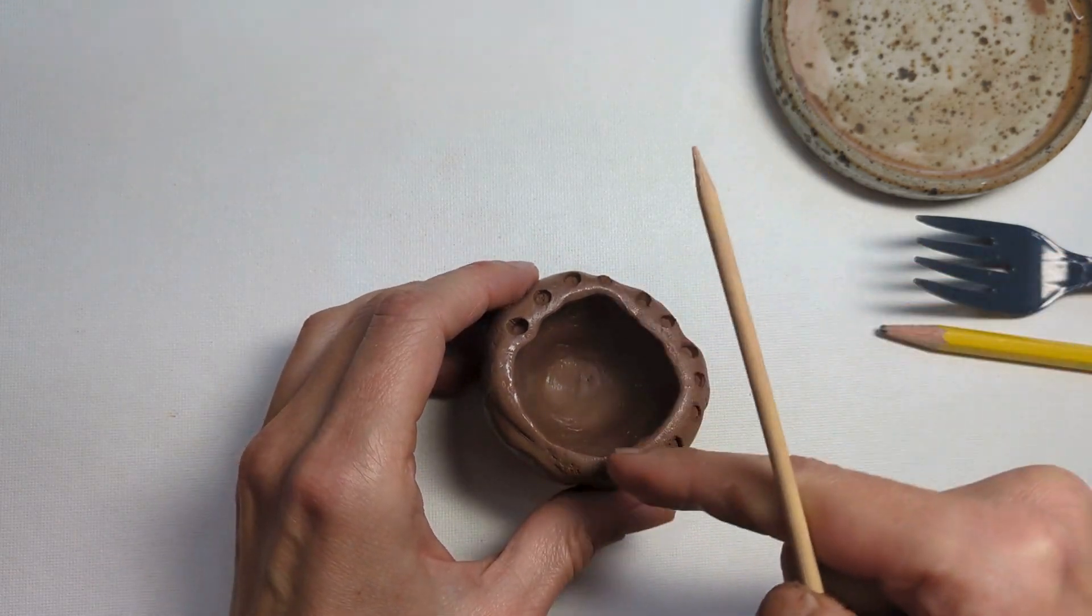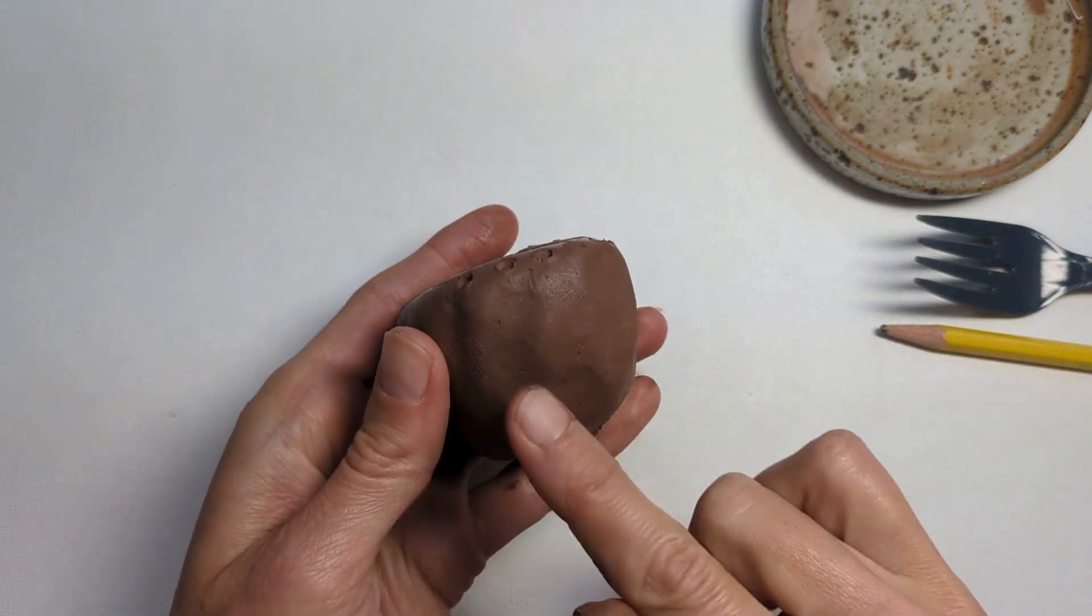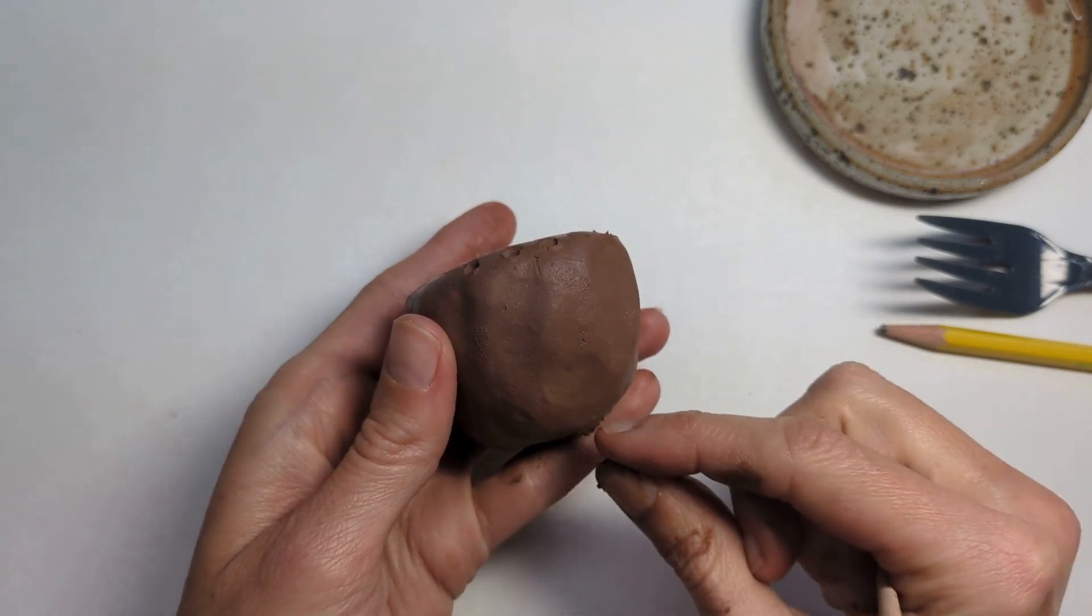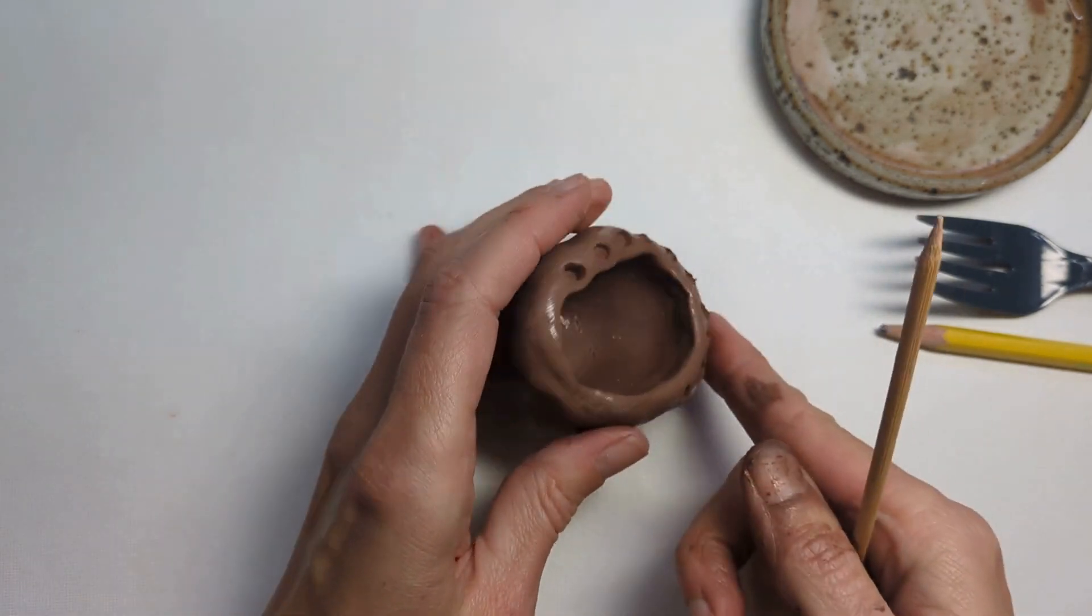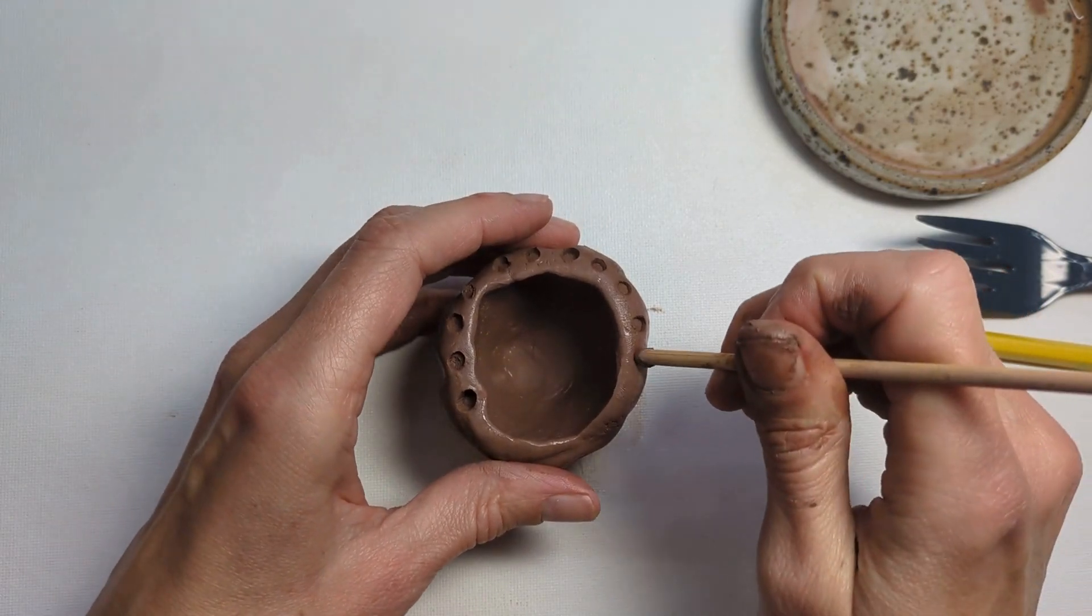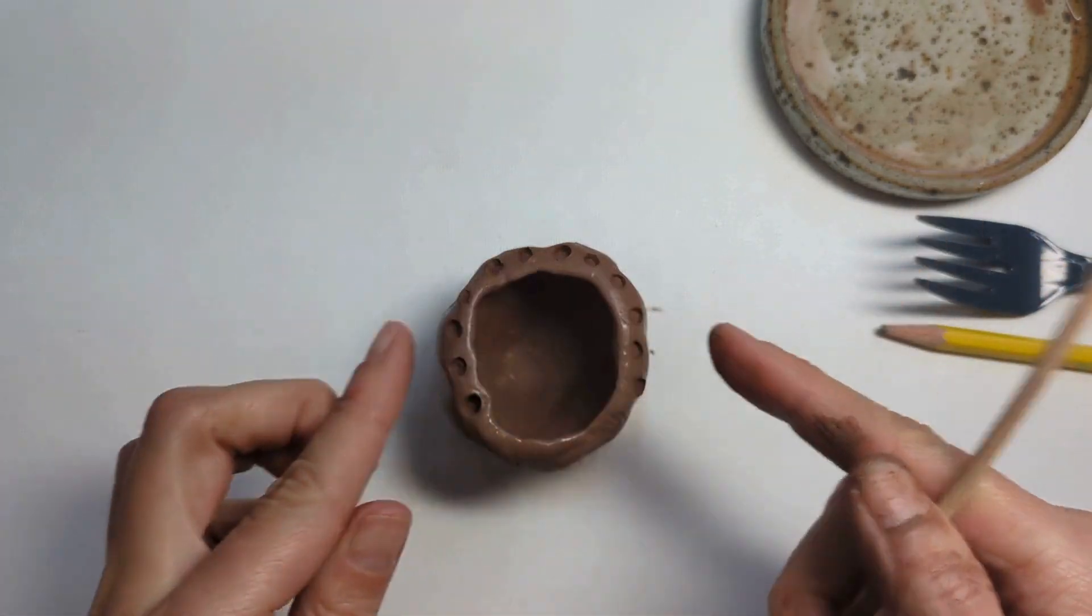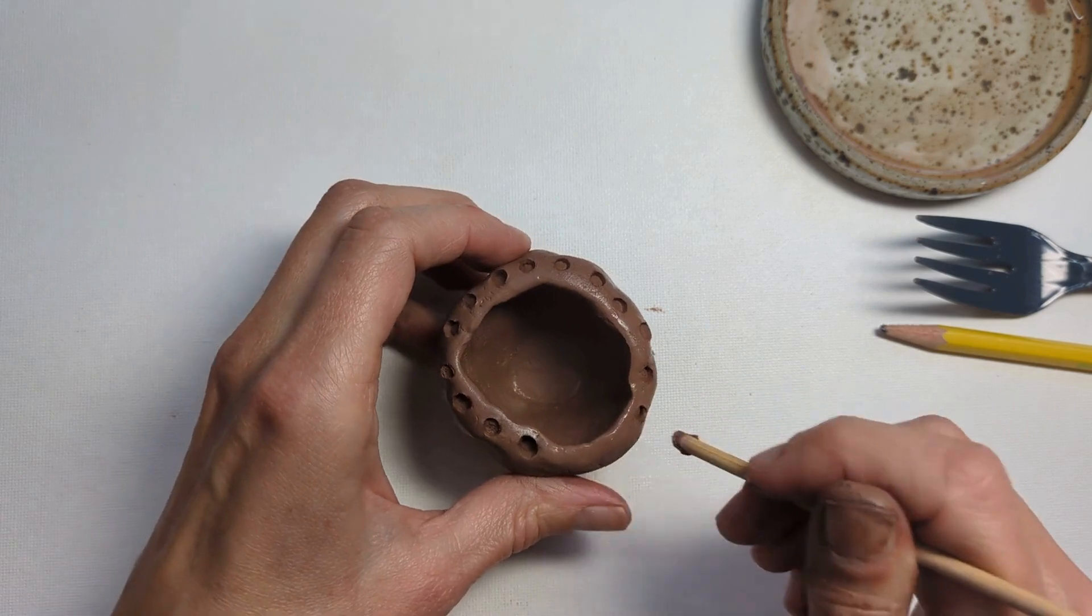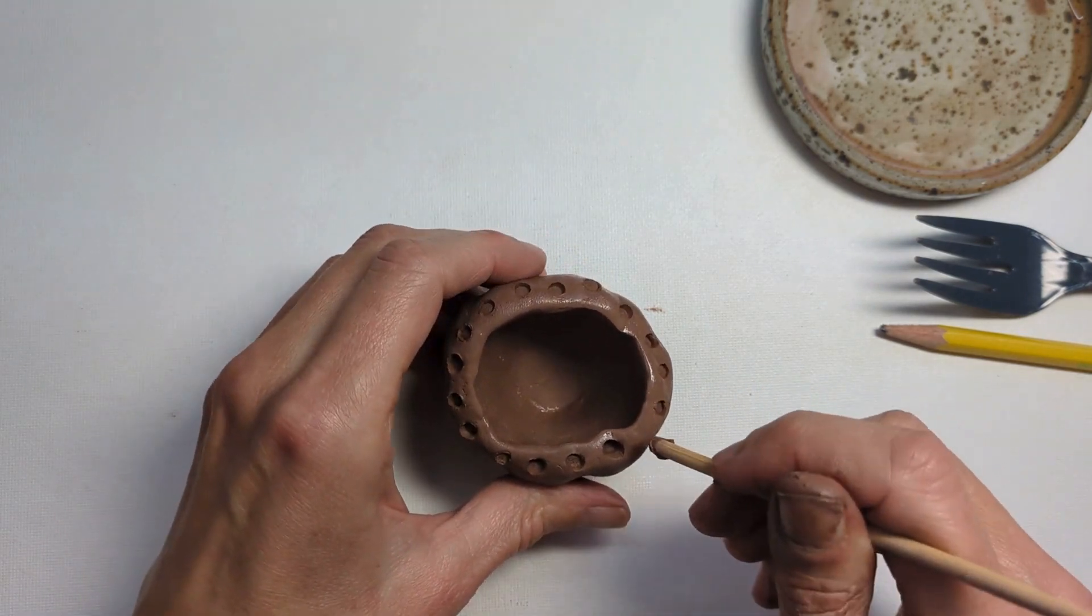They have a body, and then if it comes out a little bit at the bottom, that's called the foot. If it comes in a little bit at the top, that's the neck of the pot, which of course this doesn't have because it's a simple little pinch pot.